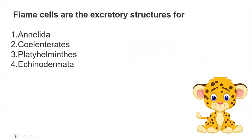Next question: flame cells are the excretory structures of which organism? Options are Annelida, Cnidaria, Platyhelminthes, or Echinodermata. Flame cells are the excretory structures of Platyhelminthes. Clear with that.